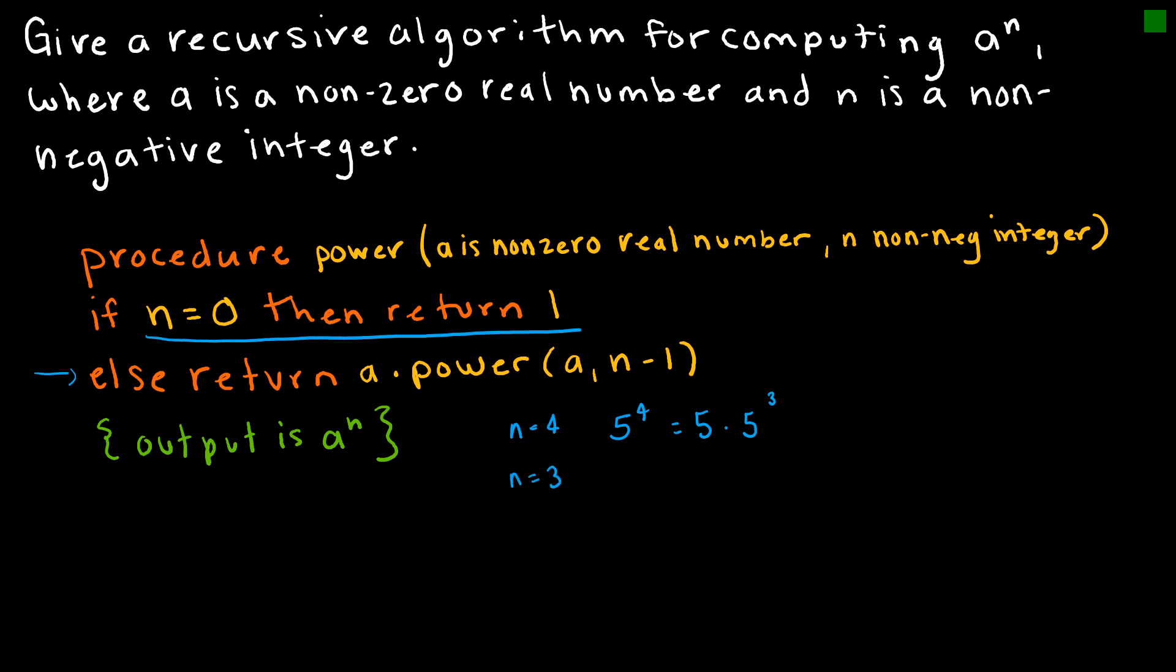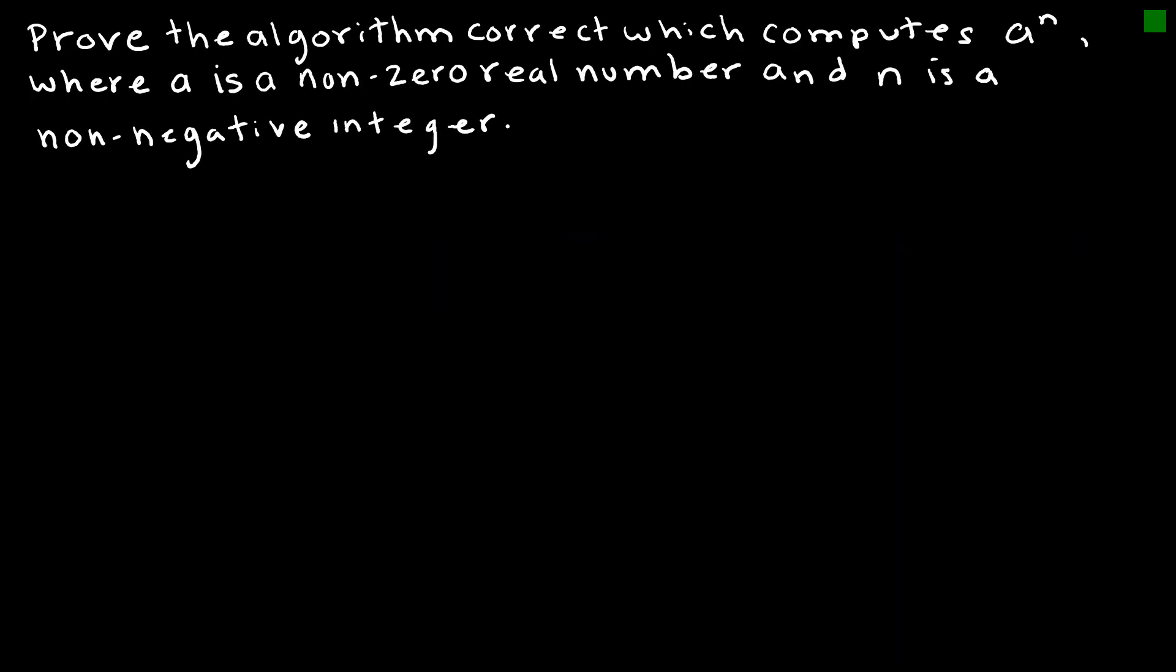Let's say I've got five to the fourth. n in this case is four, the power. Five to the fourth can be written as five times five to the three. Now I have n as three, which I can write as five times five times five squared. Then five times five times five times five to the first. And then five times five times five times five to the zero. Now n is zero, so I'm just returning one. This is five times five times five times five times one. The output is a to the n, and in this case, notice it is five to the fourth.